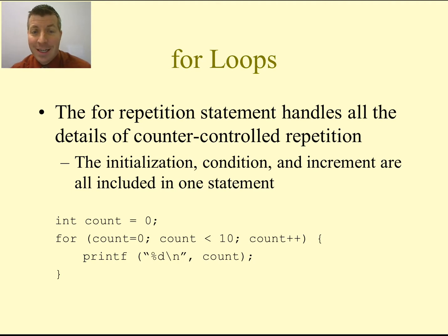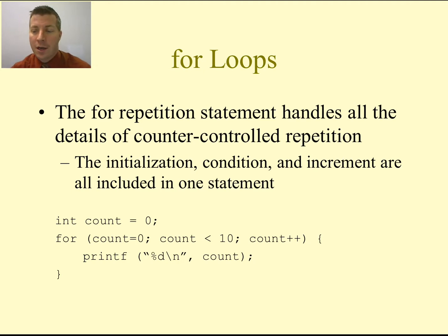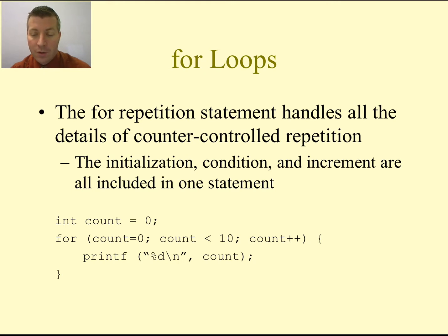So as long as count is less than 10, I'm going to continue looping. The third parameter is the increment. In this case, I say count++. If you remember from our previous lecture, count++ is the same as saying count equals count plus one — it increments the value of count and reassigns it into the count variable. Inside of the loop, all I'm doing is printing out the value of count.